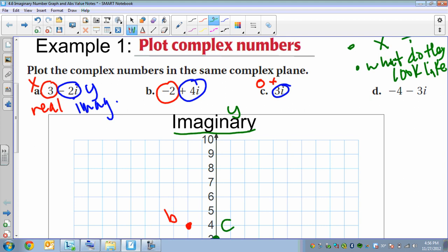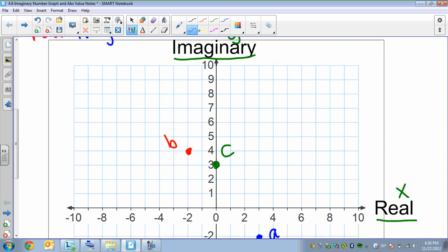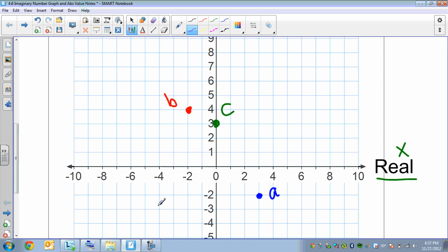And then our last one, the real part is negative 4. The imaginary part is negative 3. Negative 4. Oops. Negative 3 is right there. And that's D.